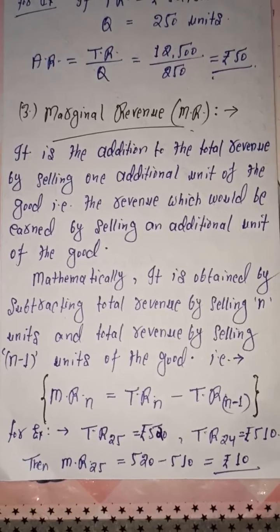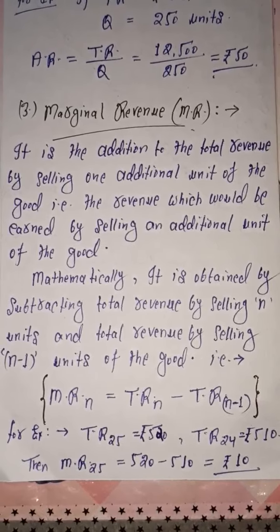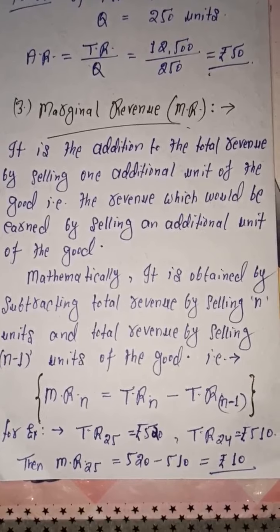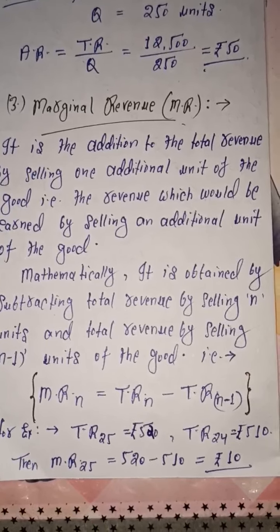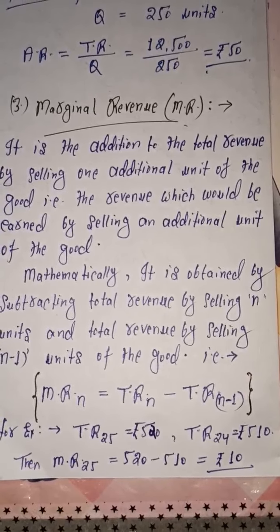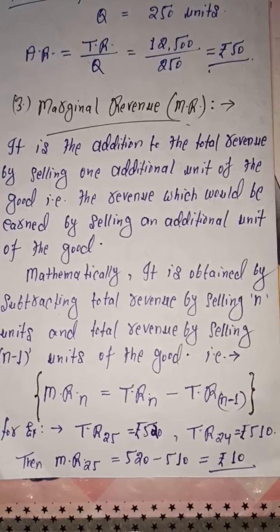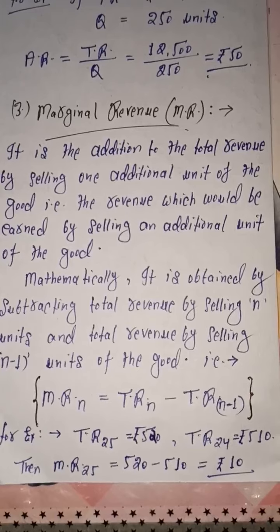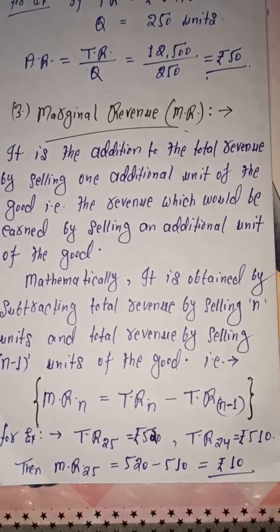For example, suppose an organization sold 25 units and after selling them the firm's total revenue was Rs. 520. Before this, when the organization sold 24 units, the total revenue was Rs. 510. So the marginal revenue of the 25th unit is TR(25) minus TR(24), that is 520 minus 510, which equals Rs. 10. So this is the marginal revenue of the 25th unit.